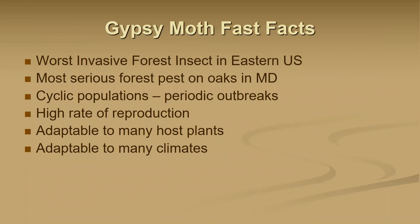The Gypsy Moth is about the worst invasive forest insect in the Eastern United States, especially on oaks. They have cyclic populations — a cycle of about 10 years from buildup to outbreak status, then the population drops and builds again. They have a high rate of reproduction, are adaptable to many host plants and many climates, and don't have a lot of native diseases or predators — though that is beginning to change.